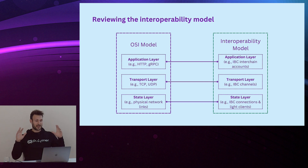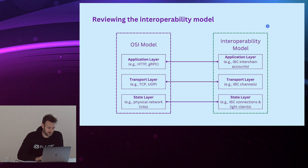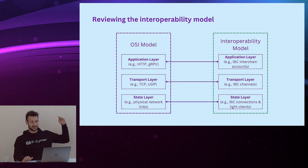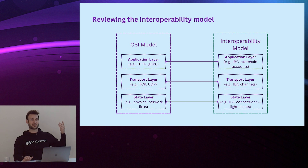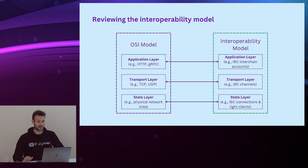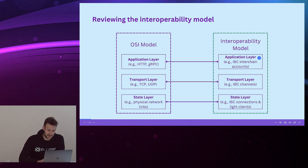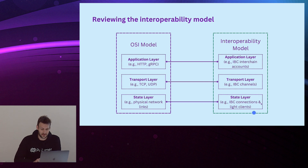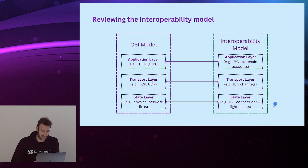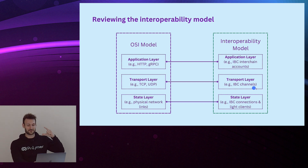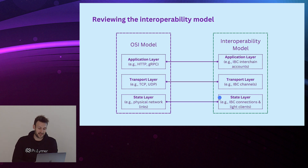At Polymer we like to make this comparison between interoperability and the OSI model. The OSI model for networking has a separation of layers: application, transport, and state. What we're saying at Polymer is that IBC and interoperability models in general have a similar structure. IBC originally had the separation between application layer and TAO layer — transportation, authentication, and ordering. But at Polymer we believe we need to split it further into a transport layer, which covers IBC channels and connections much like TCP/IP, and a state layer.